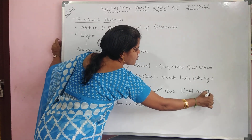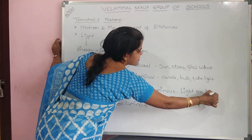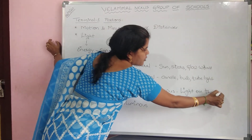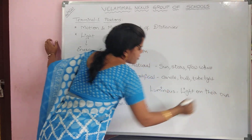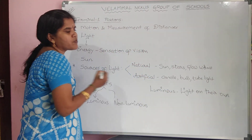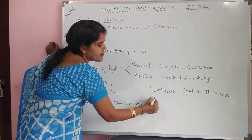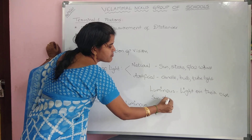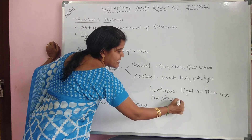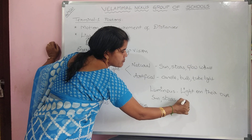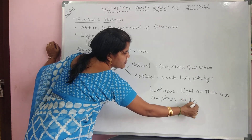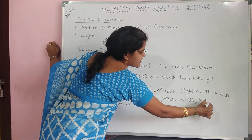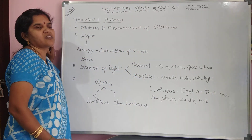Examples of luminous objects — which give out light on their own — are: sun, stars, candle, bulb, glow worms, etc. These are all luminous objects.